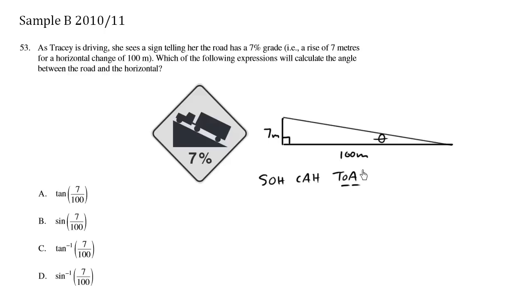So what can we write here using basic trig ratios? We know that tan theta equals the opposite, which is 7, over adjacent, which is 100.